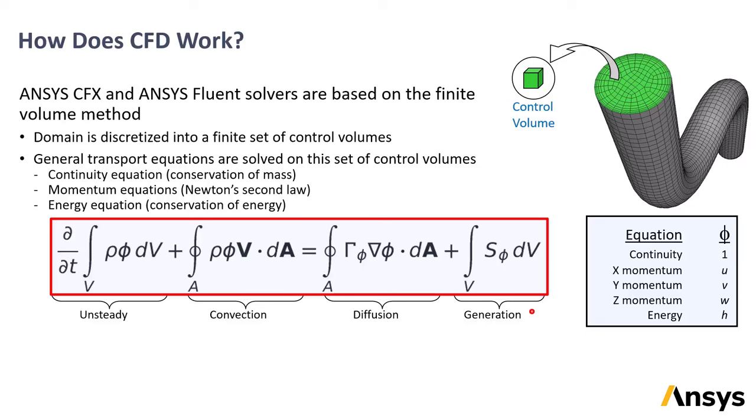If you replace phi in the equation with the corresponding variable in the right-hand column of the table here, then you'll get the continuity, momentum, or energy equations.